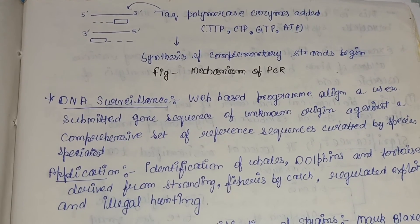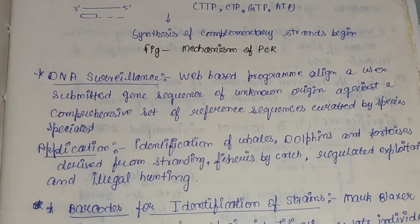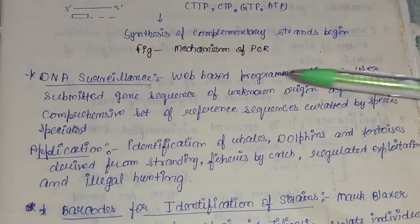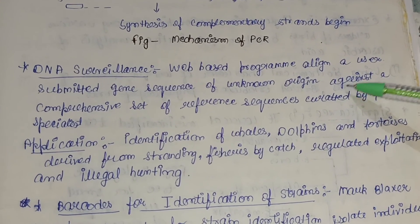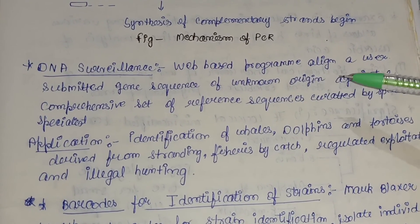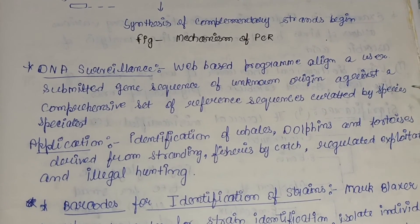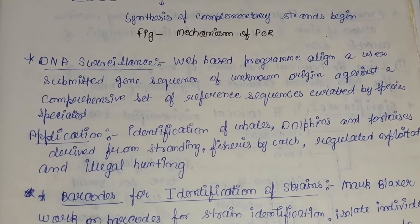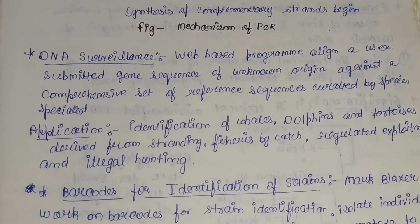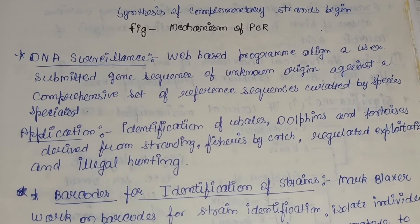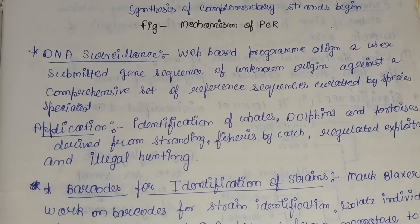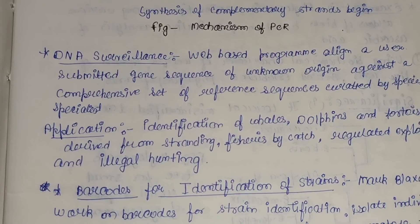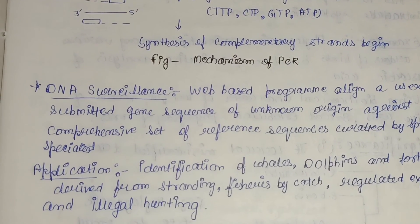DNA surveillance is a web-based program allowing a user-submitted gene sequence of unknown origin to be compared against a comprehensive set of reference sequences curated by species specialists. Its application includes the identification of whales, dolphins, and tortoises derived from strandings — fisheries captured as bycatch, regulated exploitation, and illegal hunting. It is essentially used for identifying organisms of unknown origin.